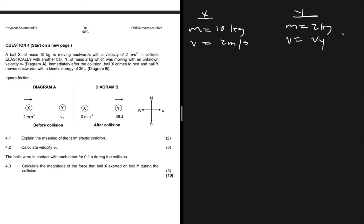Immediately after the collision, ball X comes to rest, so VF equals zero for ball X. Ball Y moves eastwards with a kinetic energy of 36 joules after the collision.